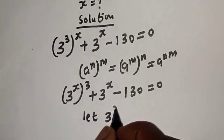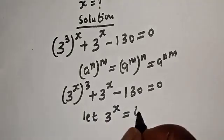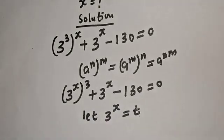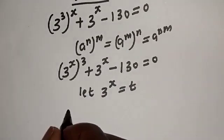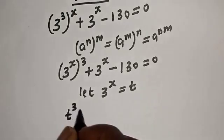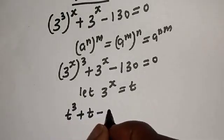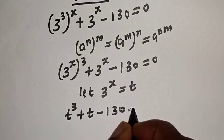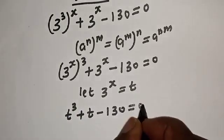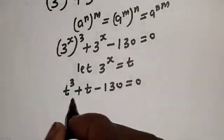Let 3 raised to power s equal t. Now we have t raised to power 3 plus t minus 130 is equal to zero.